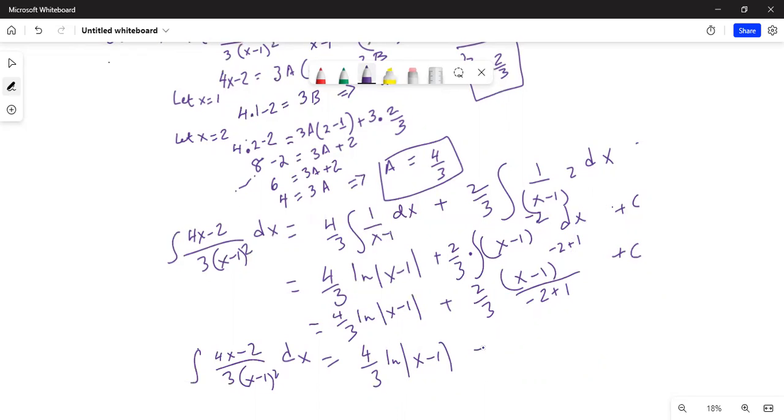So it is minus 2/3 times 1 over (x minus 1), because (x minus 1) to the minus 1 which I can bring into the denominator, plus C.